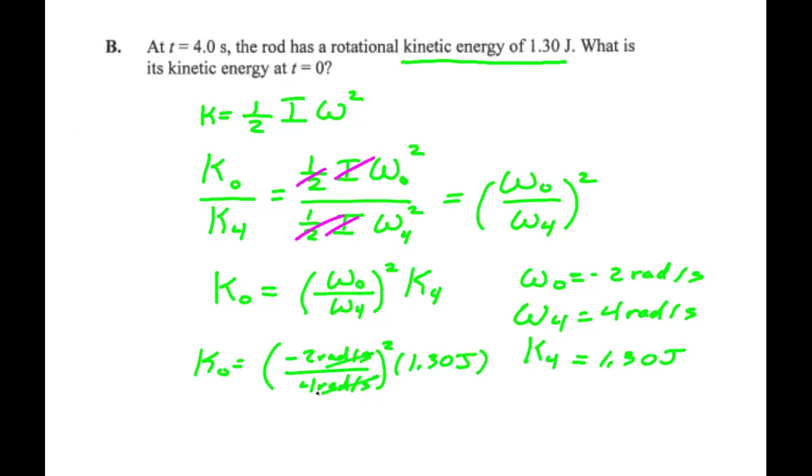That's minus 2 over 4 is minus 1/2 squared. It's minus 1/4. I'm sorry, squared is 1/4. The minus is going away. And then I multiply that by 1.30. And I get 0.325 joules, or 325 millijoules.